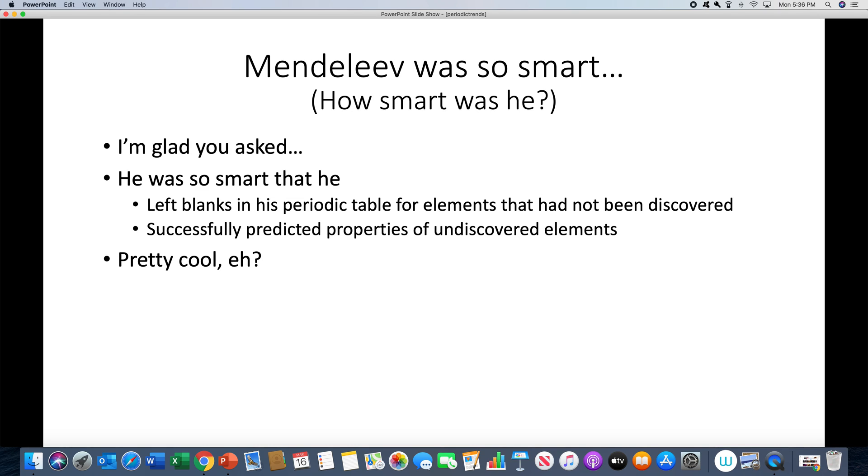Now, Mendeleev was so smart - this is where you say how smart was he. You said it out loud while you were watching this too, didn't you? Anyway, he was so smart that he left blanks in the periodic table for elements that had not been discovered, smart enough to know that there were things he did not know. And in addition, he successfully predicted the properties of those elements that had not been discovered. So for example, germanium at that time had not been discovered. Mendeleev successfully predicted what the properties of germanium might be. Later on, it was discovered and he was right. Anytime you have a theory that allows you to make predictions, and those predictions turn out to be true, that means it's a good theory. Pretty cool.